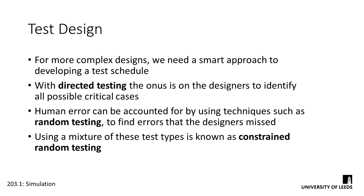In industry, it's common to use a hybrid of these two test types, known as constrained random testing. In constrained random testing, the test engineers will target random inputs to specific use cases of the system. So as opposed to just randomly toggling inputs and seeing the effect on an output, you'd use your knowledge of the module's desired function to apply random stimulus in the anticipation of a critical case.